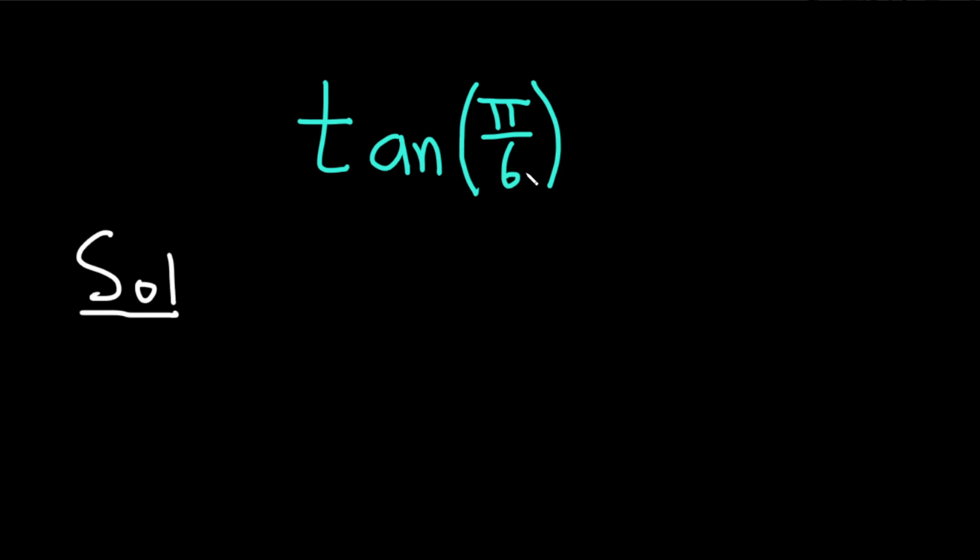So you can do this using the fact that tangent is sine over cosine, and then knowing the values for the sine of pi over 6 and the cosine of pi over 6. I'm going to do it a different way. I'm going to use it without that knowledge, but instead with a different piece of mathematics.